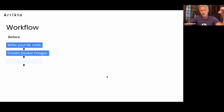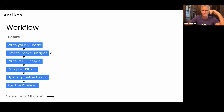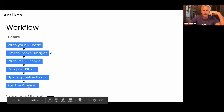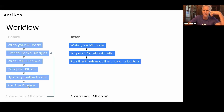This will show you the difference of where we're going. Before, you'd write your ML code, write some Docker containers, write some DSL code, compile it, upload it, and then run your pipeline. Now, you write your code, you tag it yourself, and with a click of a button, you can run your pipeline.